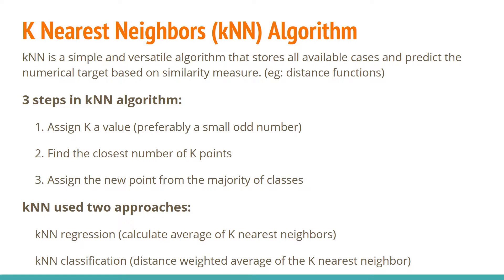There are two approaches in KNN algorithms. The first one is regression, which is calculating the average of k-neighbors. The second one is classification, which is a distance-weighted average of k-neighbors.